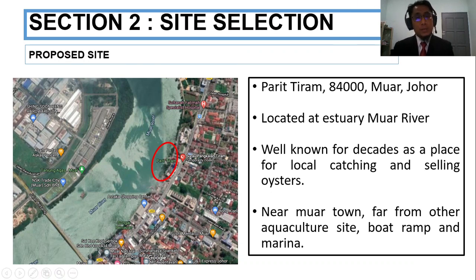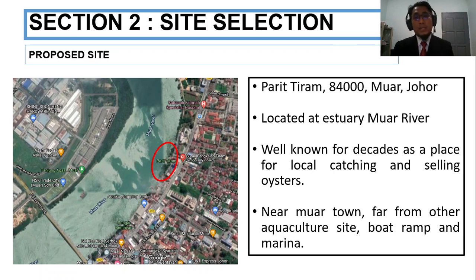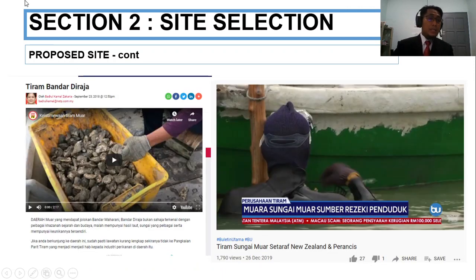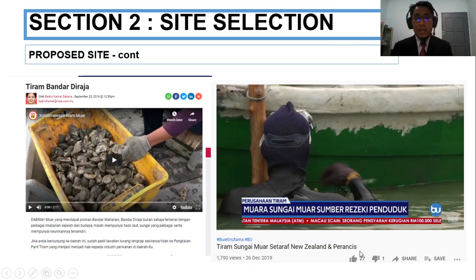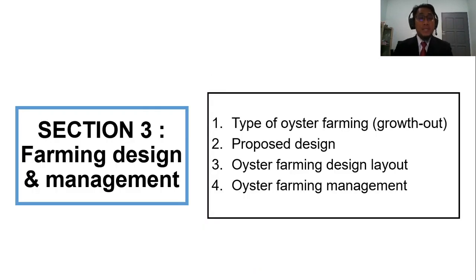The proposed site is Parit Tiram, Johor — suitably named 'parit tiram' meaning oyster canal. It is located in the estuary of the Muar River, well known for decades for local catching and selling of oysters, and is near Muar town, away from other aquaculture sites. According to online press, oysters from the Muar River are equivalent in quality to those from New Zealand and France.